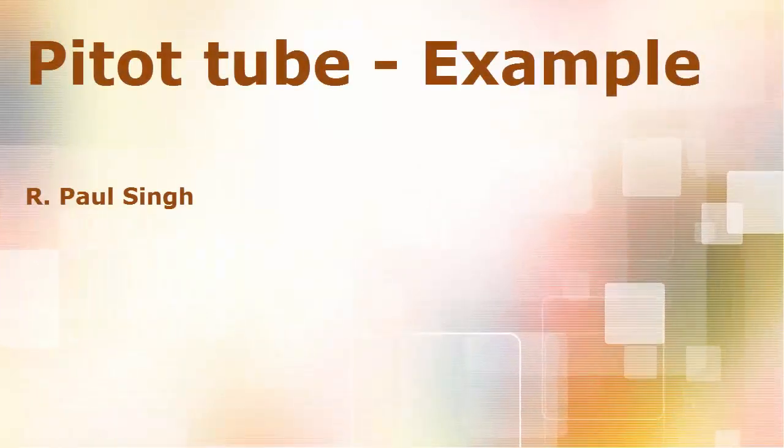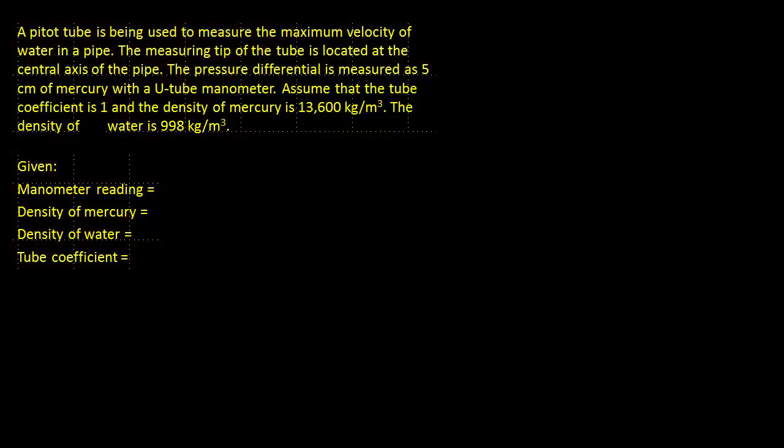Let's consider a numerical example on using a pitot tube to measure velocity of a fluid. Here we have a pitot tube being used to measure the maximum velocity of water in a pipe. The measuring tip of the tube is located at the central axis of the pipe. The pressure difference is measured as 5 centimeters of mercury with a U-tube manometer.